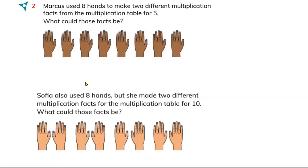Here is part two: Marcus used eight hands to make two different multiplications. Look, Marcus's hands are eight. So what could those facts be? Marcus has got eight hands.